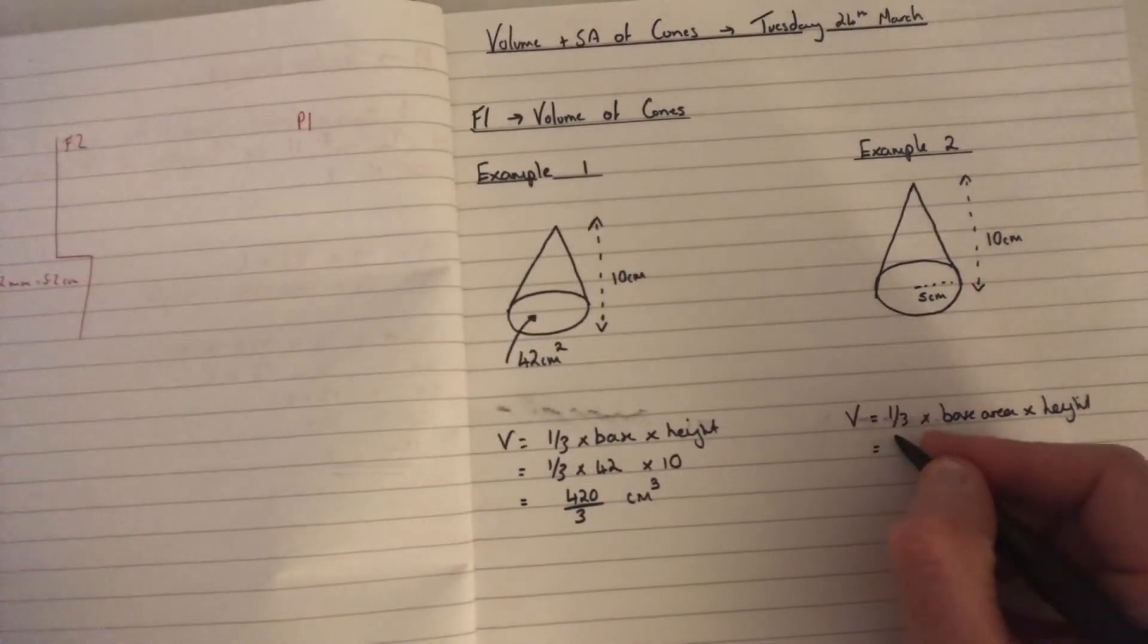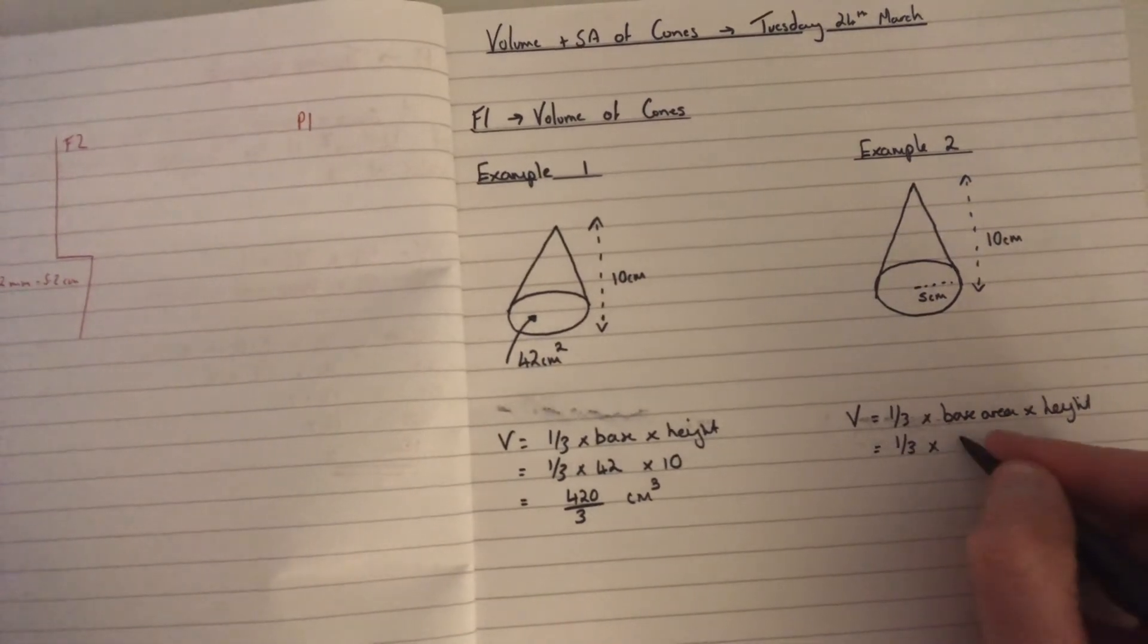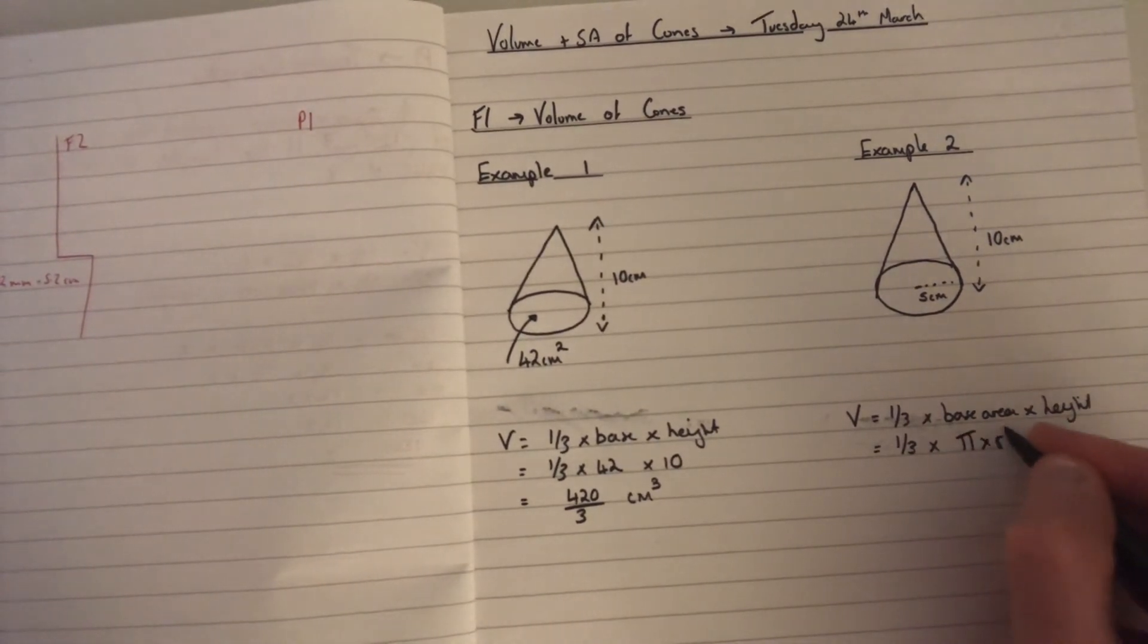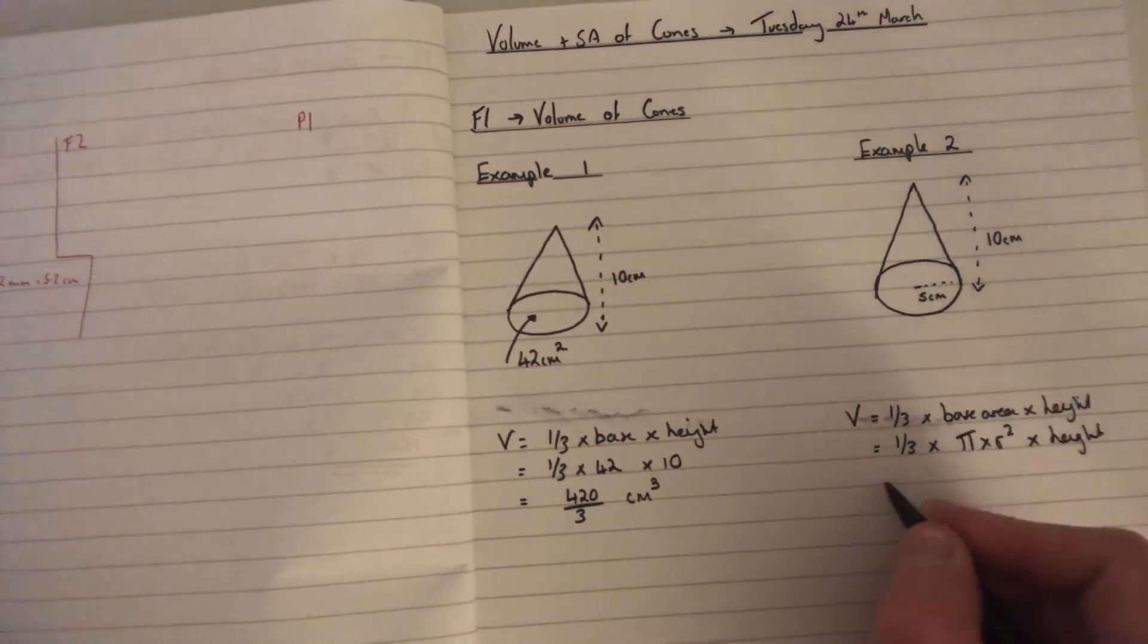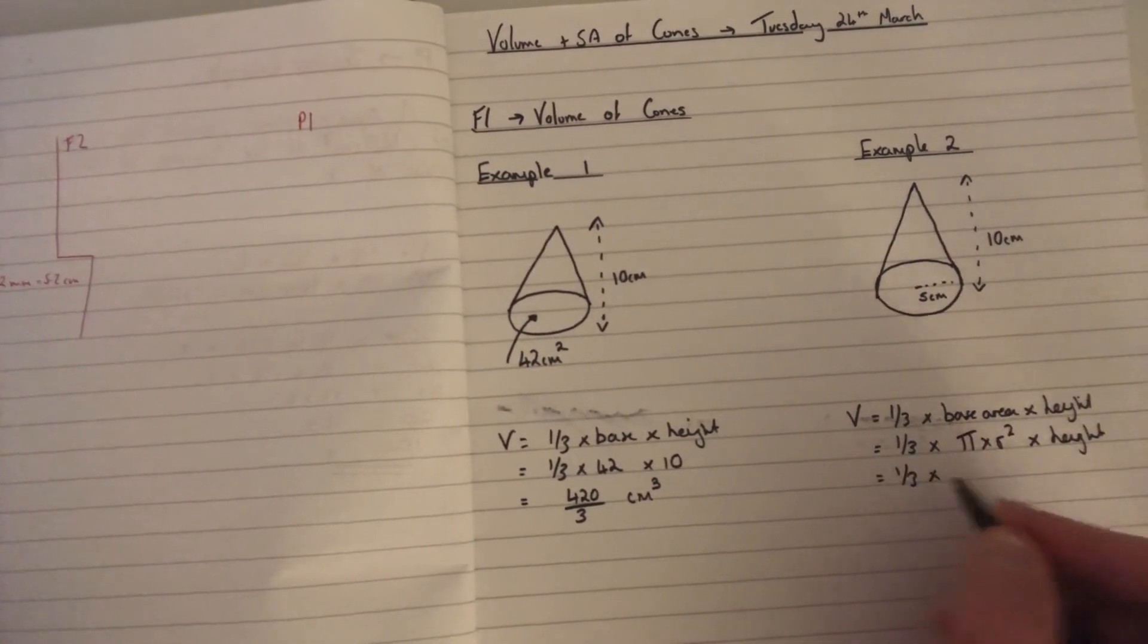So it's a circle, so that would be pi times by r squared, and then times by the height. So in this case it would be a third times by pi times by five squared times by 10.